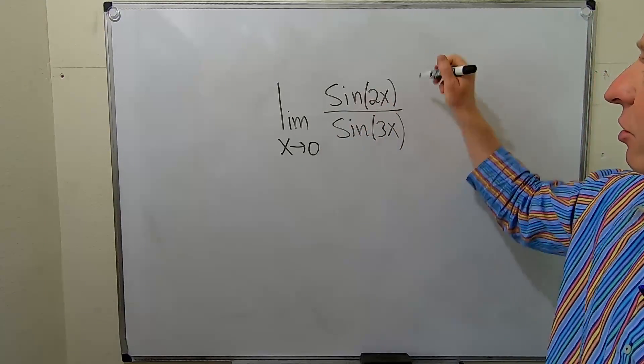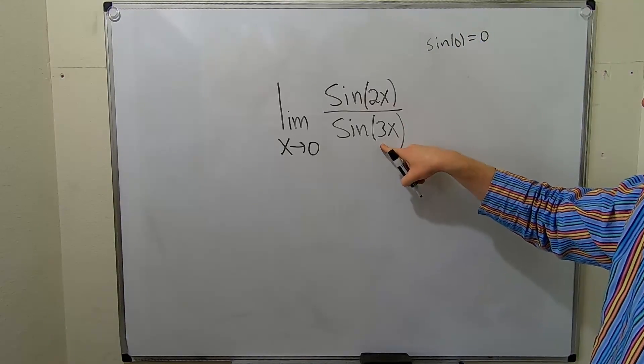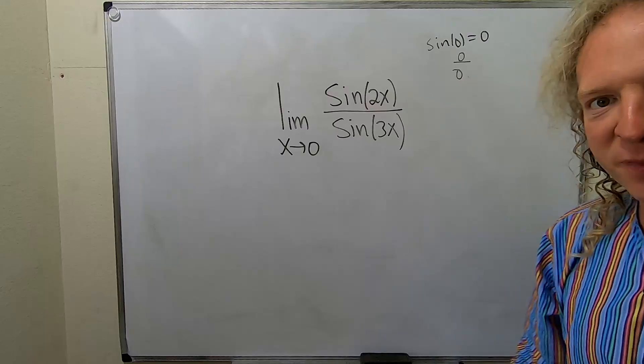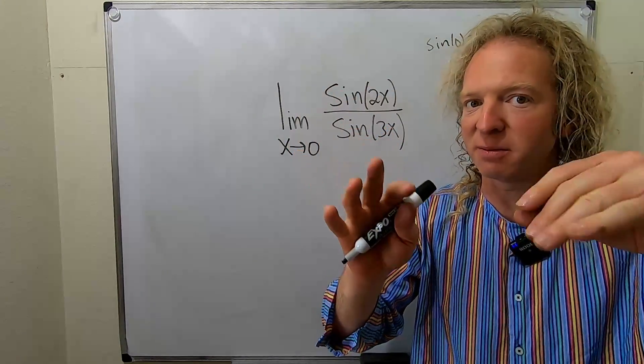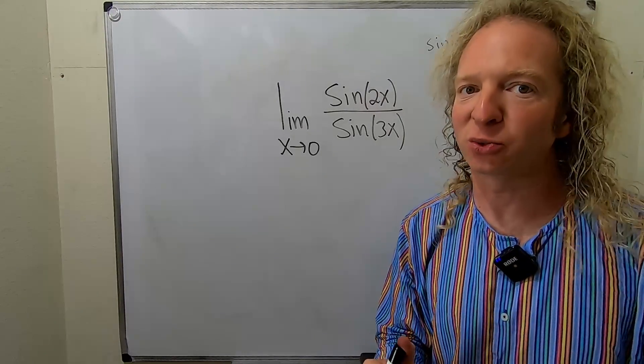So, you put the 0 here, you'll get sin of 0, which is equal to 0. You put the 0 here, you'll get the same thing. So, you get 0 over 0. That's called an indeterminate form. Whenever you have 0 over 0 or any infinity plus or minus over any infinity plus or minus, you can use something called L'Hopital's Rule.